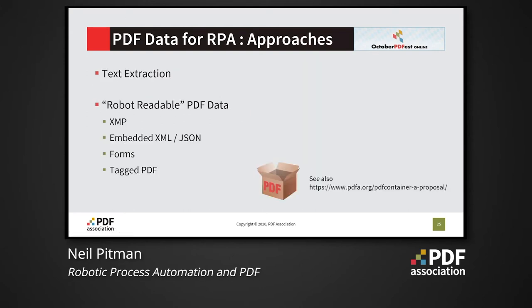There are a number of possible approaches to storing data in PDF, some of which make it much easier than others to extract the required data. In many cases we may not be in a position to have any say in how the PDF is created, so we may have to rely on trying to extract relevant data by text, visual layout, or other means. But if we do have a choice, we should aim for robot-readable PDF with XMP metadata or embedded data files. PDF forms and tagged PDF are also useful options.